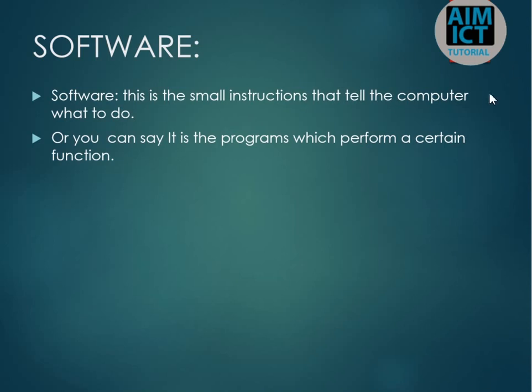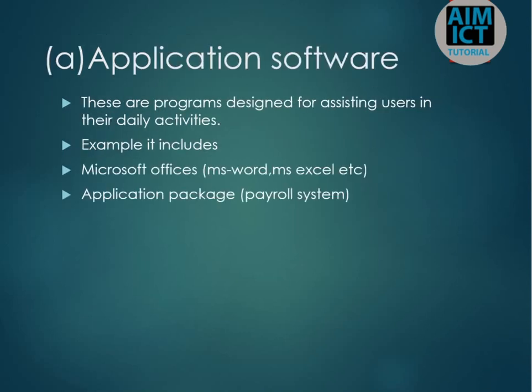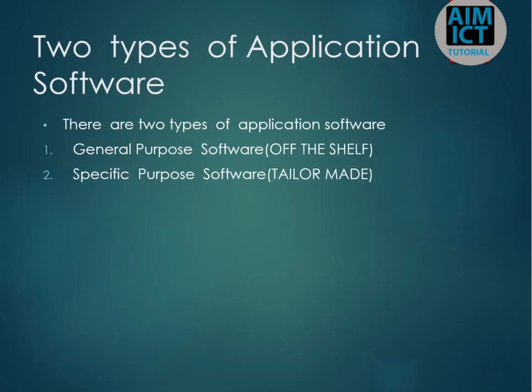Moving on to software: software refers to programs, instructions, or apps. We discussed two major areas of software. The first is application software — programs designed to assist users in their daily activities, such as Microsoft Office and MS Word.